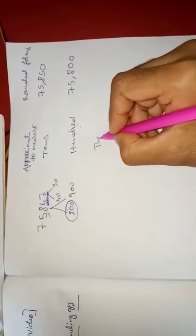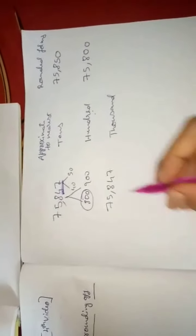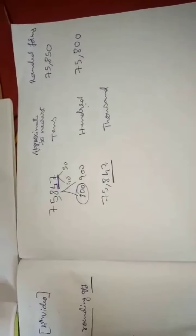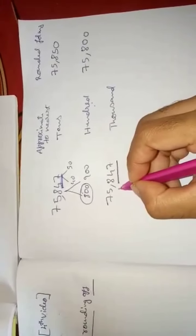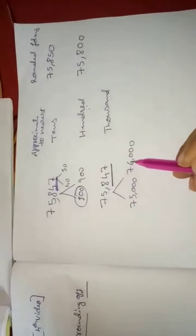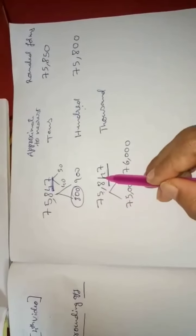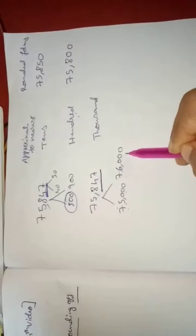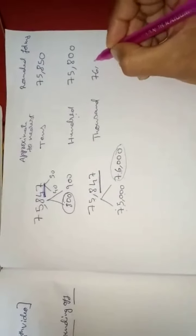Next, round off to nearest 1000: look at the hundreds place — three digits together — 847 is greater than 500. The previous number is 75000 and the next is 76000. Since 847 is greater than 500, we round off to the next — 76000. 75847 is nearer to 76000 than to 75000, so the answer is 76000.